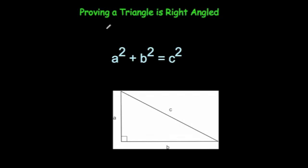In this video, we're going to look at proving that a triangle is right-angled. Pythagoras' theorem states that if you square the two shorter sides of a right-angled triangle and add them together, it's equal to the square of the longest side. If a triangle is not right-angled, they won't equate. We're going to prove triangles are right-angled by squaring the two shorter sides, adding them together, and checking it equals the longest side squared.